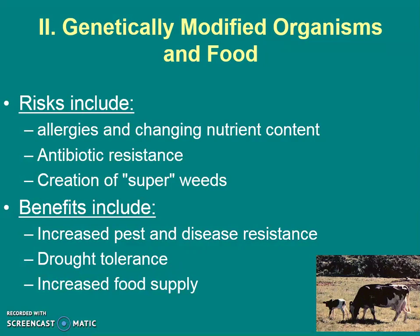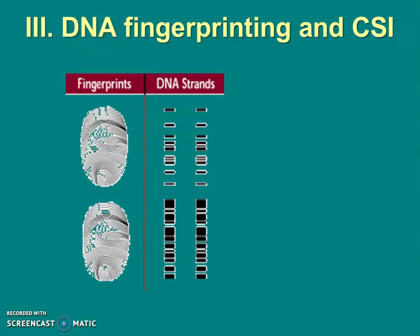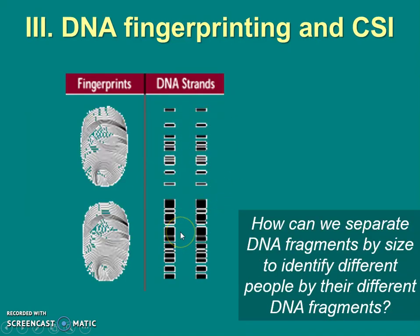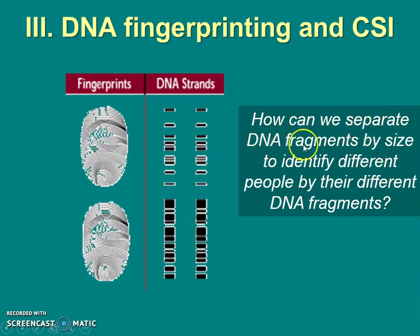We have to weigh the risks and the benefits and make our decisions, because you have to make those decisions in your future — whether buying these things or creating laws for or against them. We can also use DNA technology to compare different people. Just like we can compare people by fingerprints, we can compare DNA fingerprints. A DNA fingerprint is made of these bands — we can separate DNA fragments by size to identify different people.